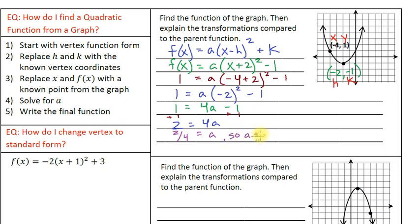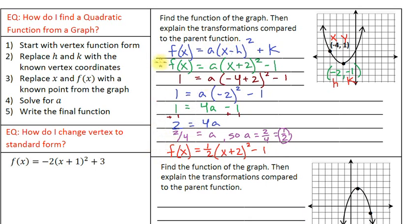So a equals 2 over 4, which simplifies to 1/2. Now that we've found a, we can write our equation. f(x) = (1/2)(x + 2)² − 1. The a value is replaced with 1/2, x remains a variable, h is negative 2 giving plus 2, and k is negative 1.